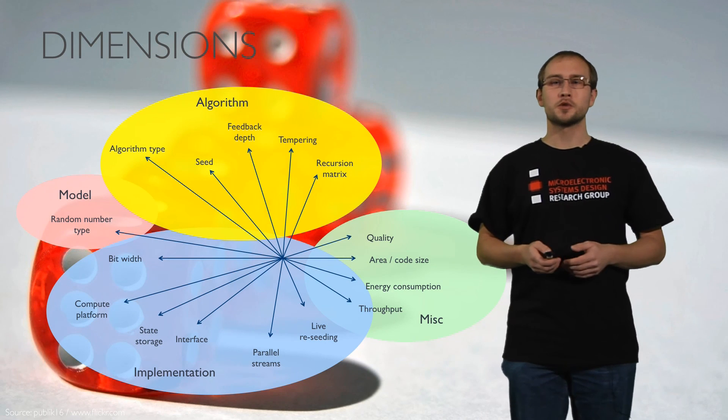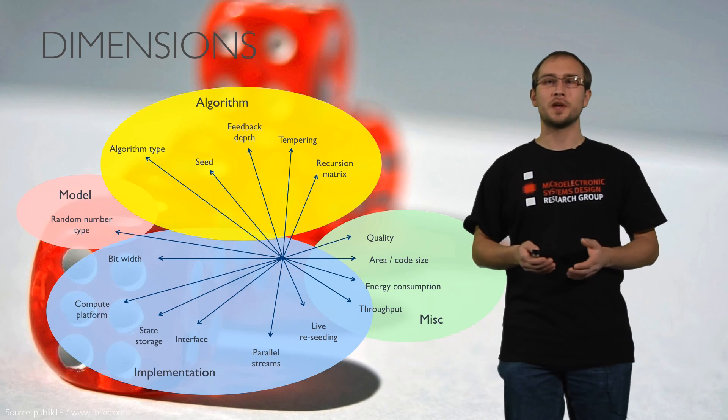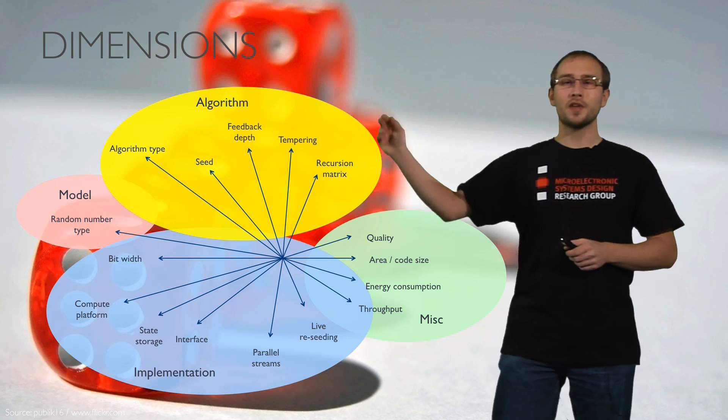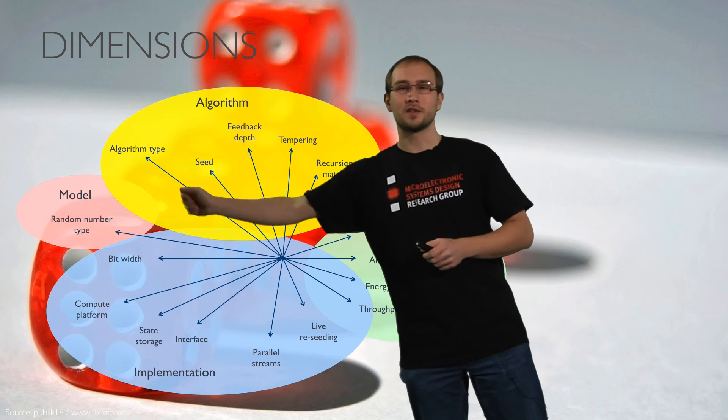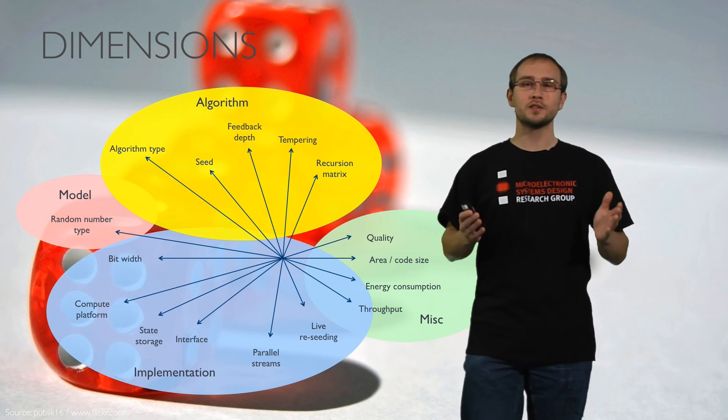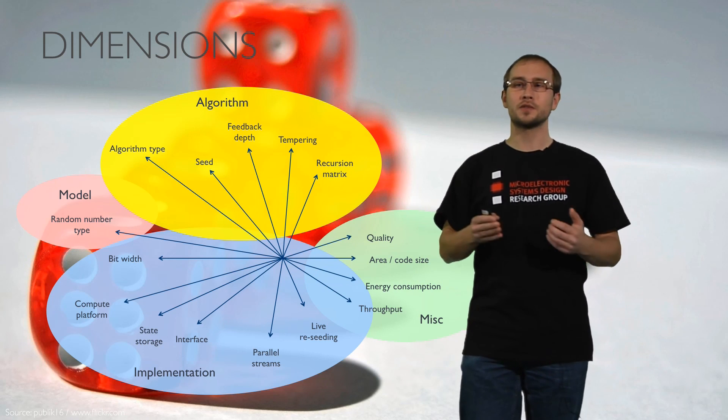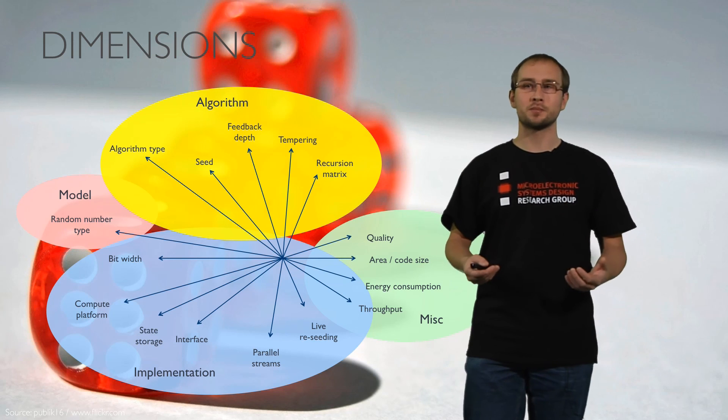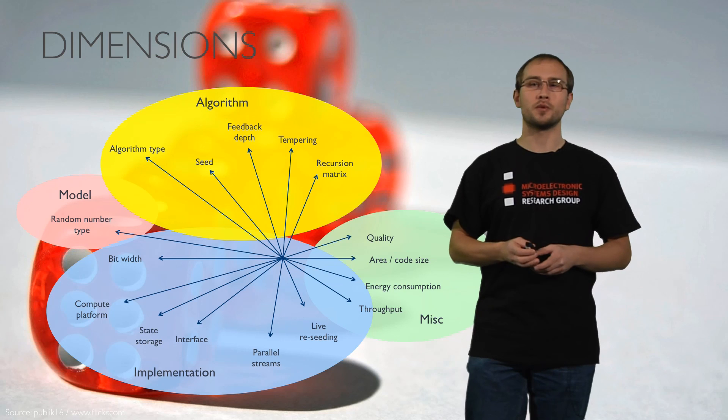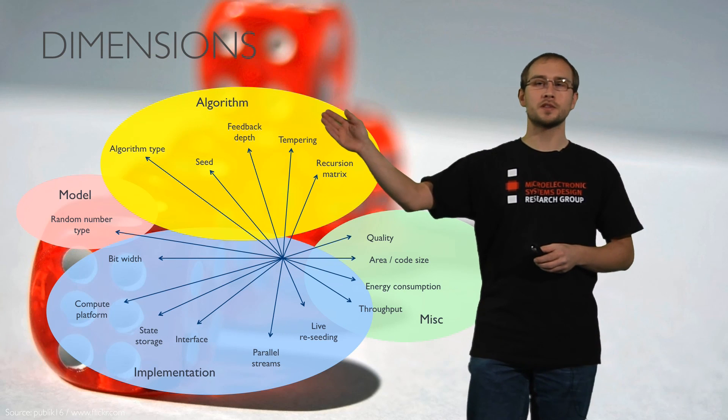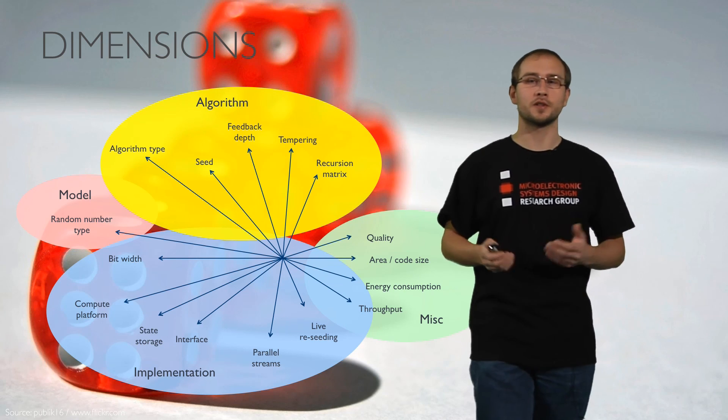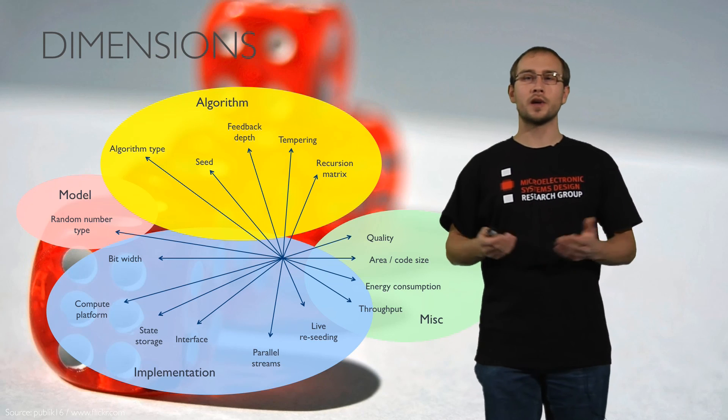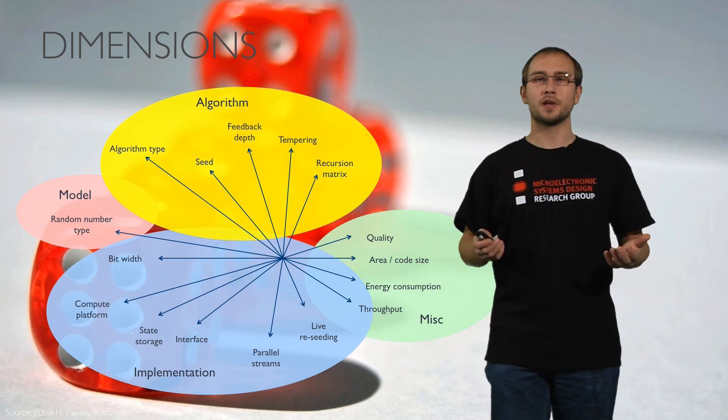This slide shows some examples for dimensions that we have in the design space of a random number generation system. Over there we have the most important thing. This is the model. The model determines what kind of type of random numbers do I select and this of course has a big influence on the remaining design process. We have dimensions that are related to the algorithm for example the type of algorithm, how can I set the seeds, what is the feedback depth and so on.